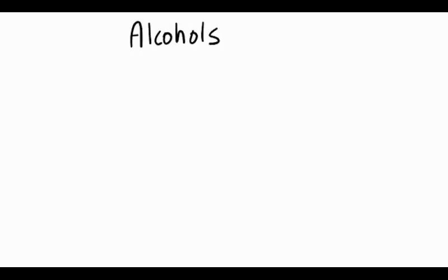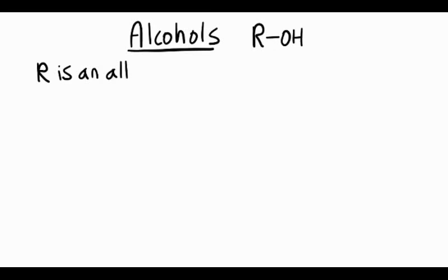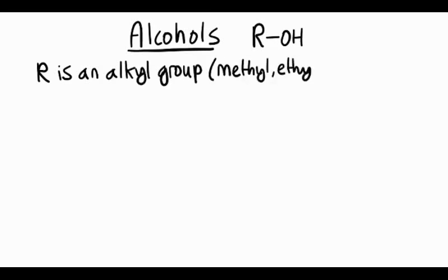Naming alcohols. The general formula for an alcohol is ROH, and in organic chemistry an R group is a general symbol for an alkyl group. An alkyl group could be methyl if it has one carbon, ethyl if there are two carbons, propyl if there are three carbons, butyl if there are four, and so on. So it can be any type of alkyl group.